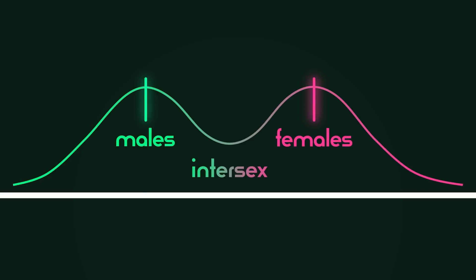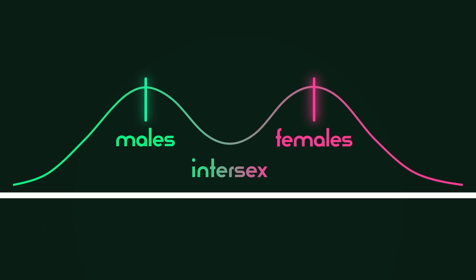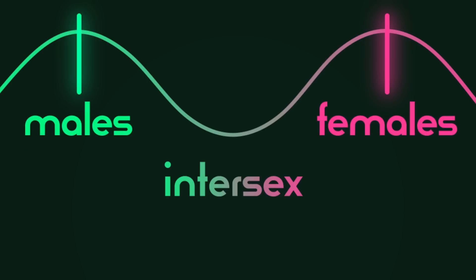Here, intersex conditions are used to argue that a bimodal distribution is the most accurate representation of sex. Since intersex people are often viewed as having a mix of male and female traits, they are therefore placed in between the two averages of male and female.